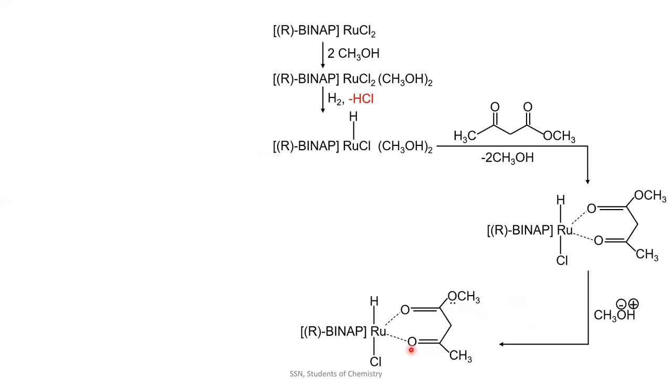we can write the carbonyl group as C plus and O minus. To neutralize this positive charge created on carbon, hydride ion will leave the active site of the metal. As it is a backside attack, our stereochemistry will be proton on the dashed bond and oxygen on the wedge bond.